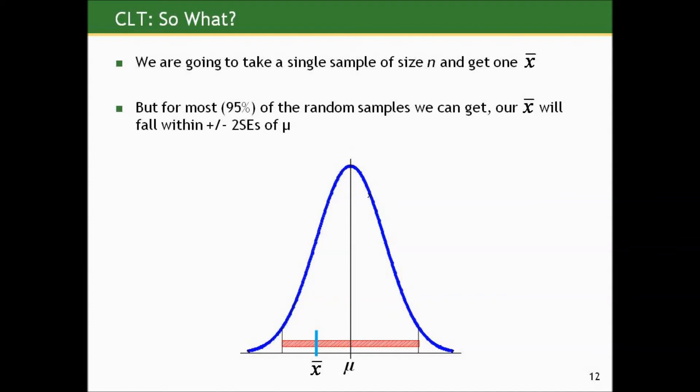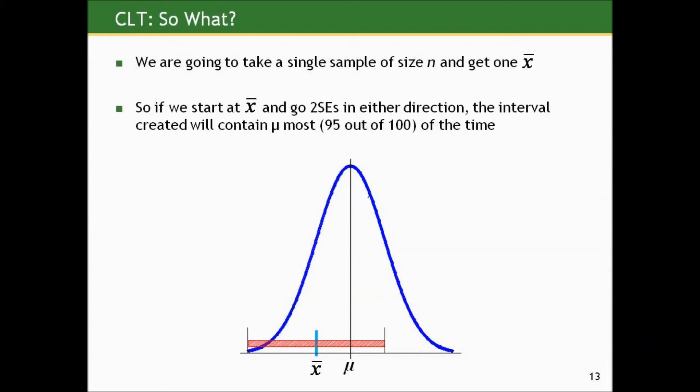Well, think of it this way. We are going to take a single sample of size n and get one x-bar, but these results from the central limit theorem coupled with the properties of the normal curve mean that for most of the random samples we could take, the x-bar we get will fall within plus or minus two standard errors of mu. Standard error is the term we give to the standard deviation of sampling means to distinguish it from the standard deviation of individual values.